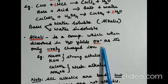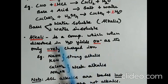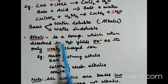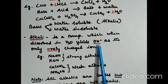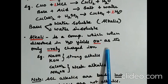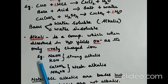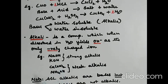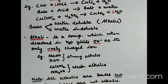I hope you remember the definition of an acid: acid is a compound which when dissolved in water yields hydronium ion as the only positively charged ion. Examples for alkali: sodium hydroxide and potassium hydroxide are strong alkalis. Calcium hydroxide and ammonium hydroxide are weak alkalis.